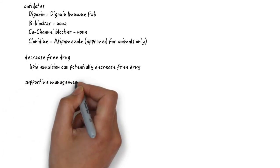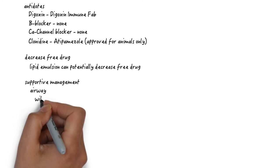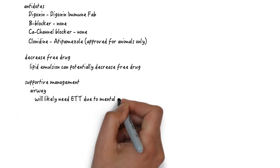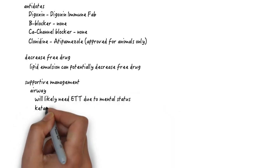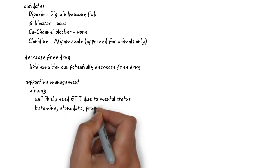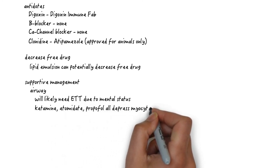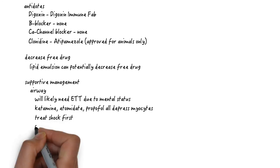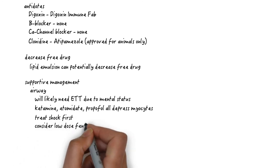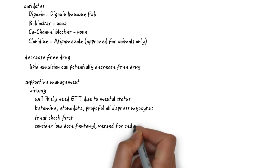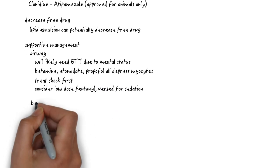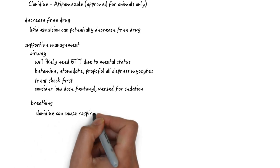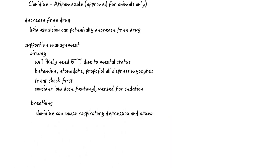And lastly, supportive management. From an airway perspective, these patients generally need intubation because of their depressed mental status. However, remember that ketamine, etomidate, propofol, they all depress the myocyte, so you should treat the shock first. And when intubating, because they're already altered, consider low-dose fentanyl and Versed for sedation. For breathing, clonidine can cause respiratory depression and apnea, and you would support this with mechanical ventilation as needed.